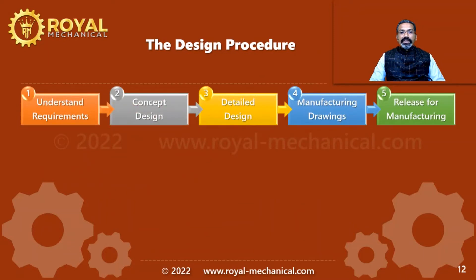The design procedure is a 5-step process. Step 1 is to understand the requirements. Step 2 is to perform the concept design. Step 3 is to perform the detailed design. Step 4 is to create the manufacturing drawings. Step 5 is to release the design data for manufacturing. Let me explain each step in detail.